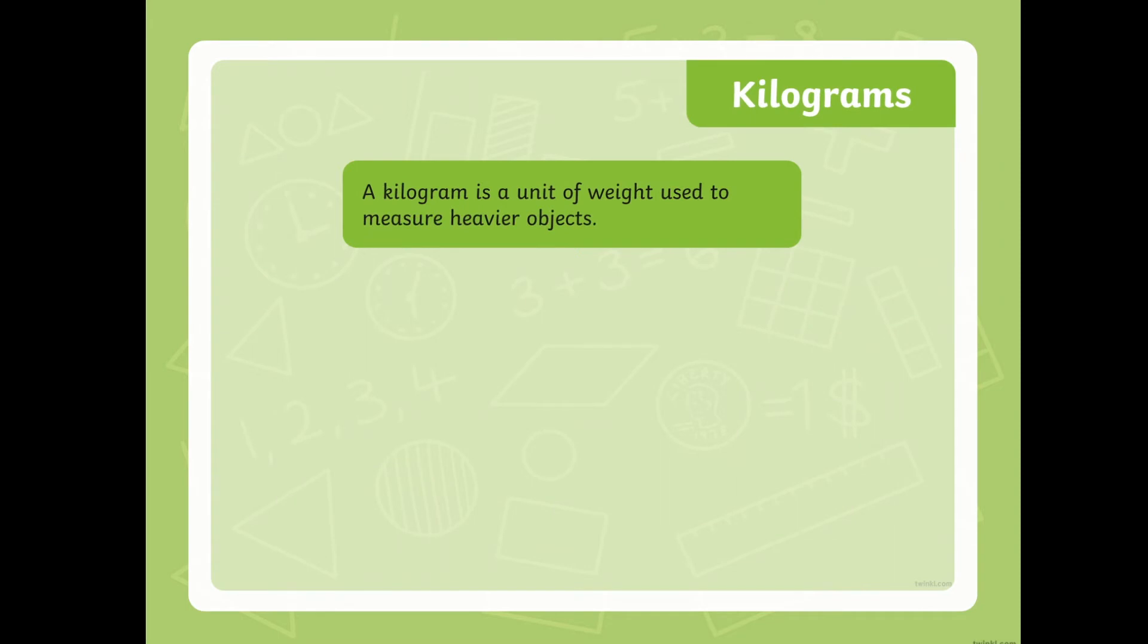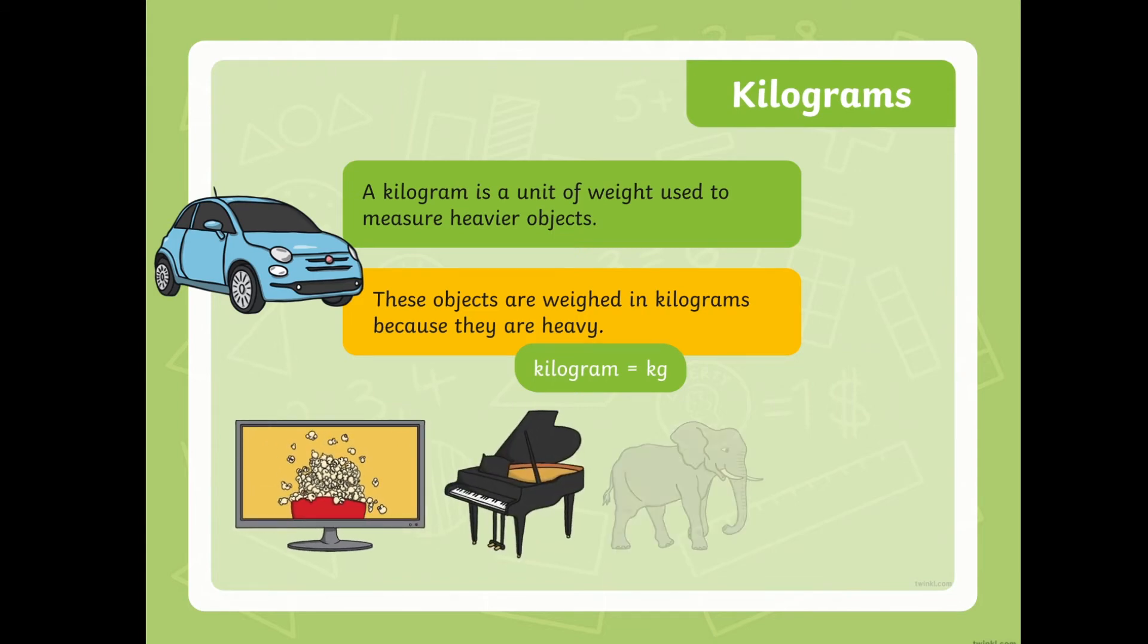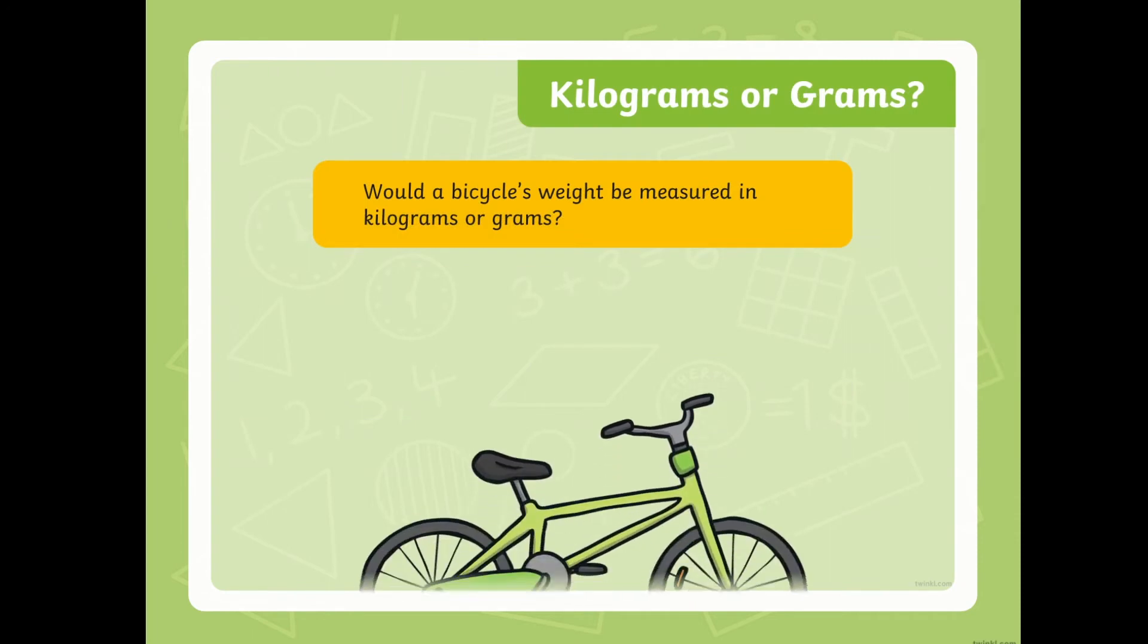A kilogram is a unit of weight used to measure heavier objects. These objects are weighed in kilograms because they are heavy. A kilogram, we can write it down by putting kg. Some examples of objects that can be measured using kg or a kilogram is a car, a television, a piano, an elephant, a table, and a whiteboard, or even people.